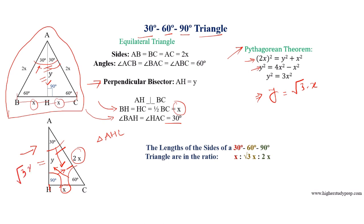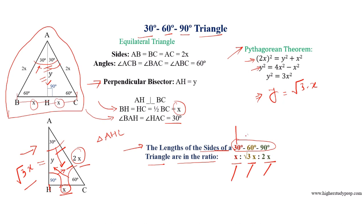We can say that the lengths of the sides of a 30-60-90 degree triangle are in the ratio X : √3X : 2X, representing the sides opposite to the angles 30 degrees, 60 degrees, and 90 degrees respectively.